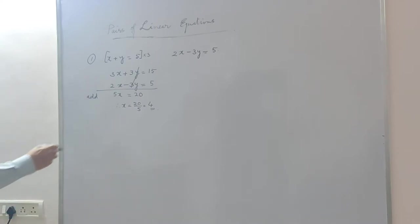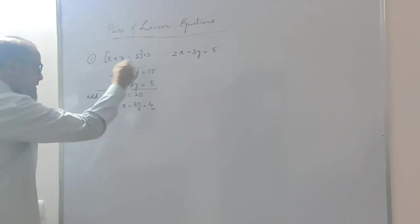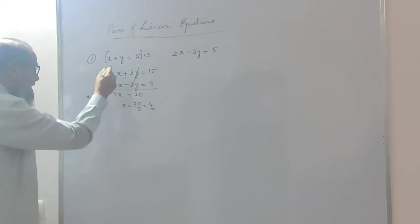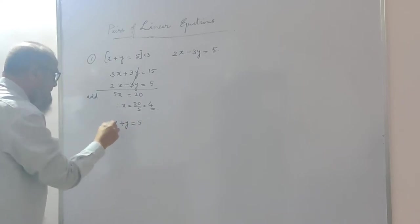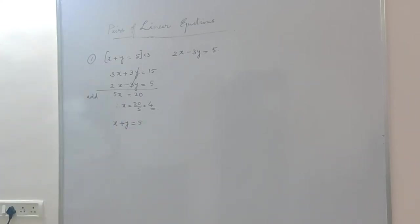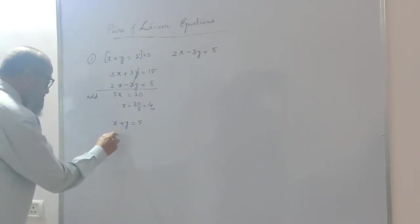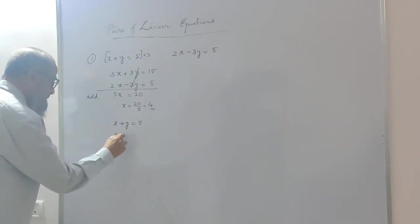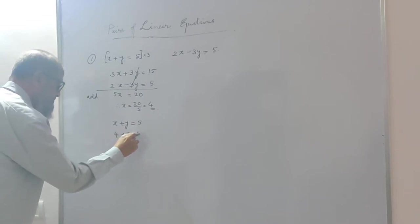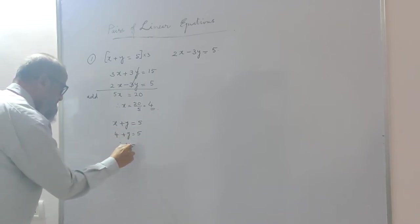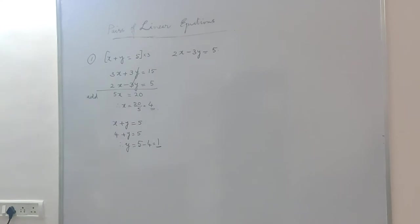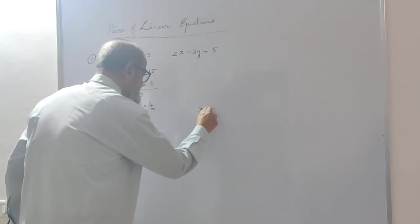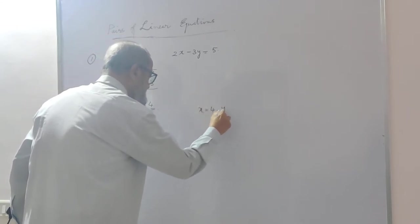By substituting the value of x in one of the given equations, I will take the simpler one: x plus y is equal to 5. Substituting x equals 4: 4 plus y is equal to 5. Therefore y is equal to 5 minus 4, that is 1. So x is 4 and y is 1. This is the answer.